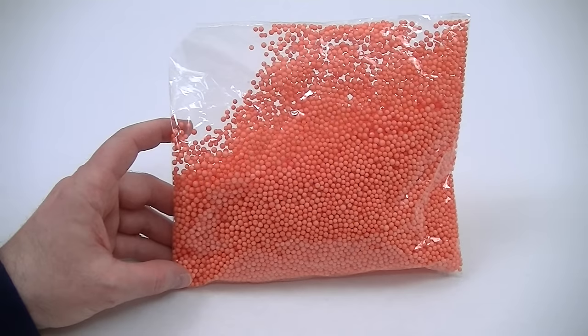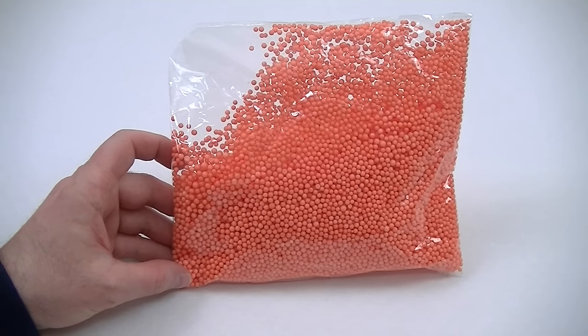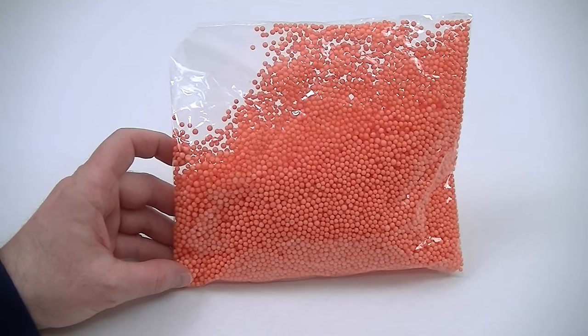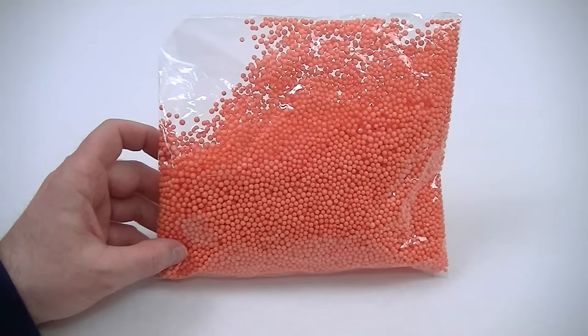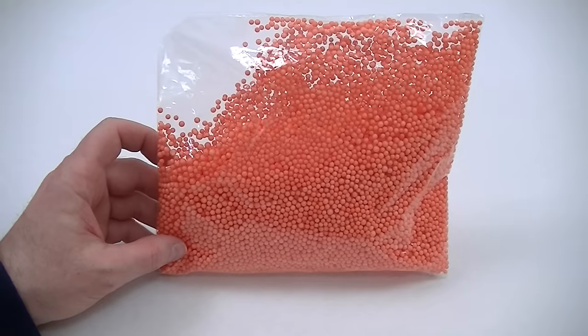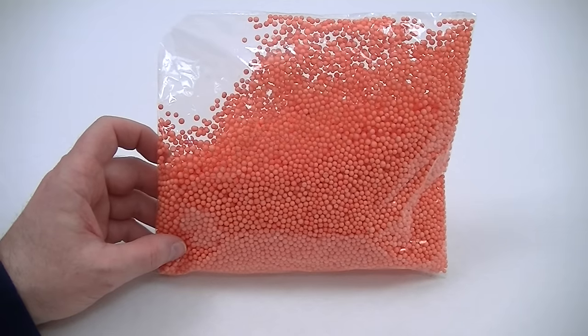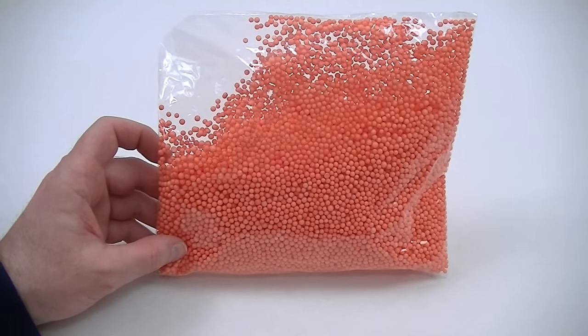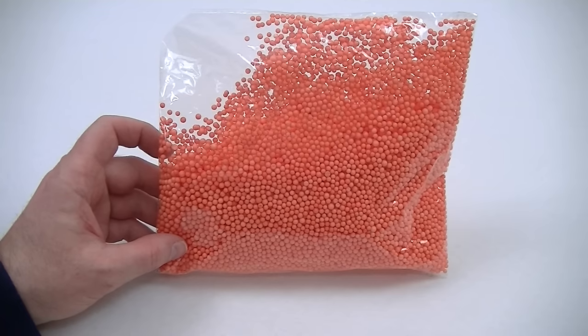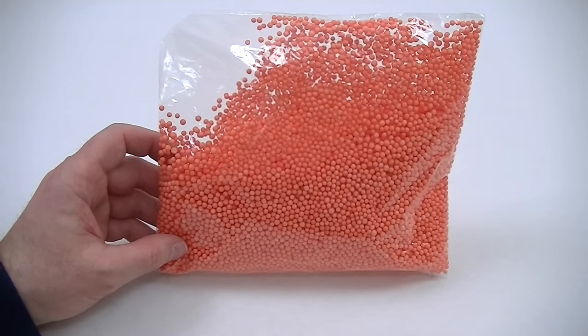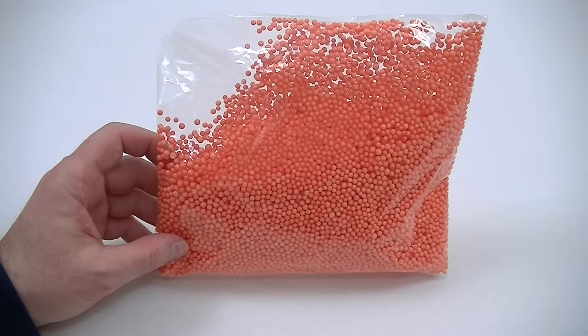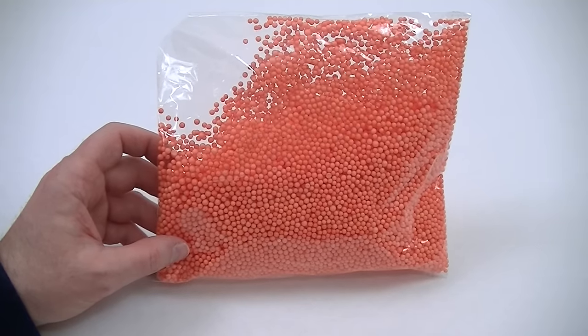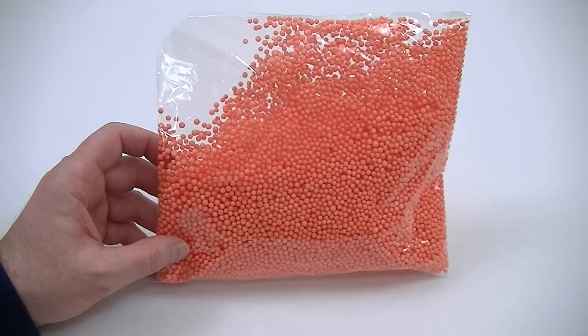Most toy vacuum cleaners have very little suction power, so you need to get some lightweight dirt in order to simulate the real thing. So I've just got myself a bag of very lightweight polystyrene balls from eBay. You can get these in various sizes and colors. Make sure you don't get ones that are too big, otherwise they won't fit inside the nozzle of the cleaner. So I'm going to spread a few of these balls out on my tabletop and we'll see how effective this little toy Dyson is at picking them up.